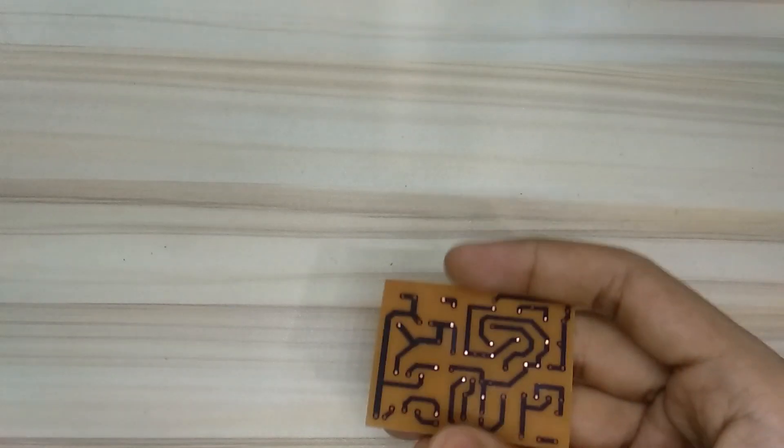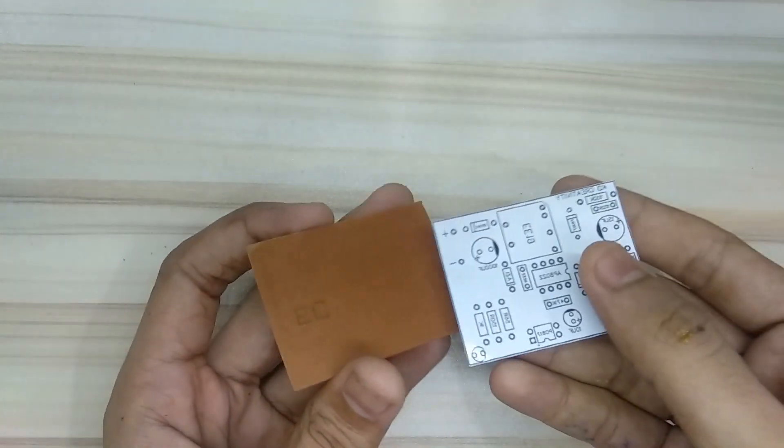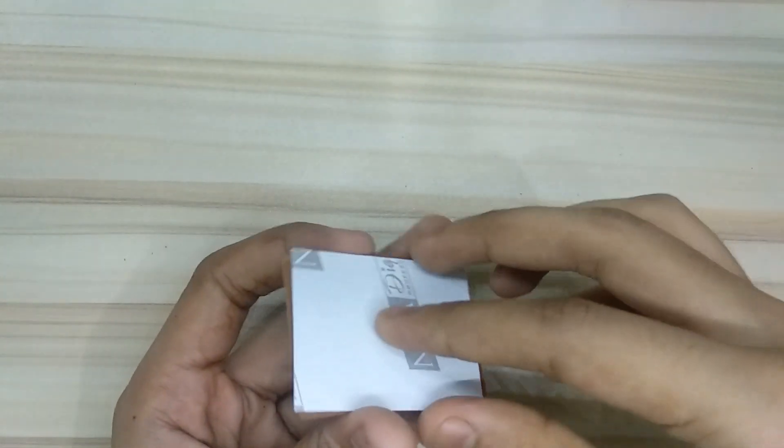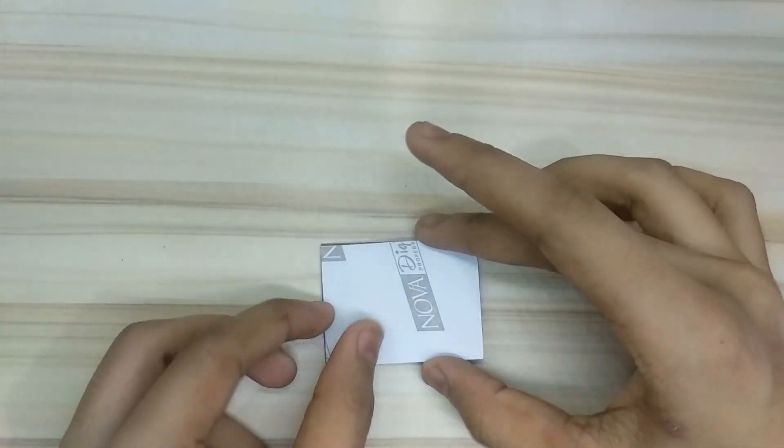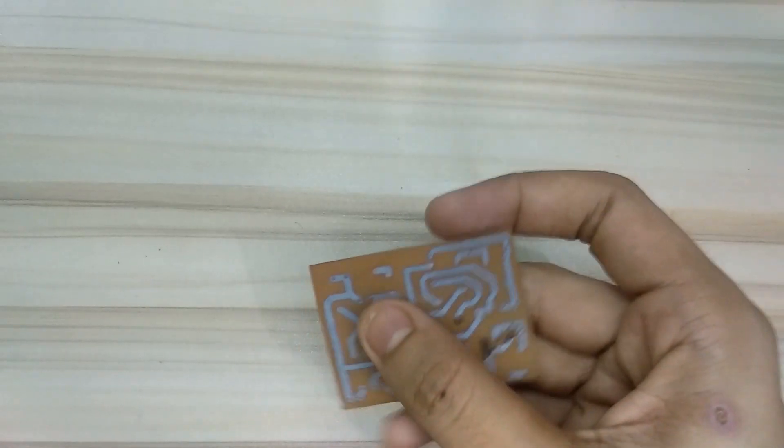So now our PCB is fully etched. Now let's print the top silk layer. So again press it with iron for 5 minutes. I've printed the top silk layer. So now you need to clean its bottom layer.